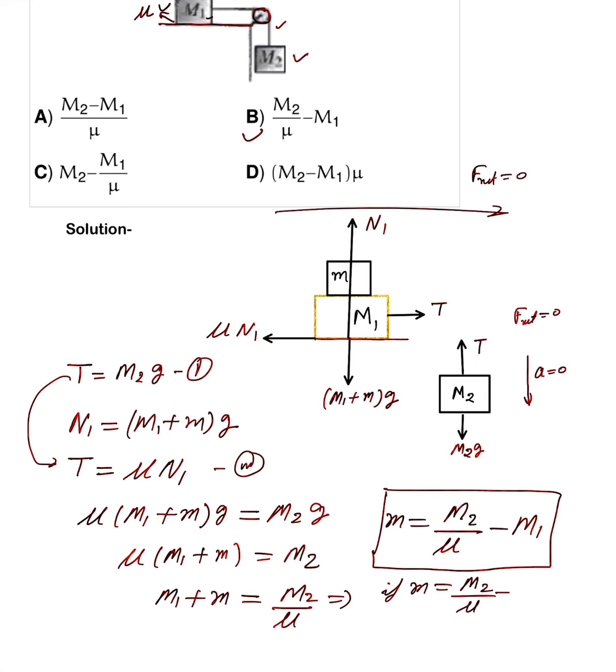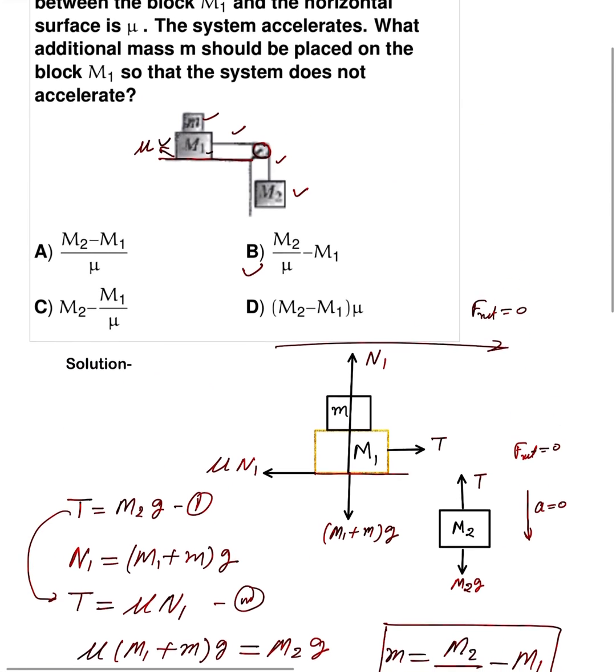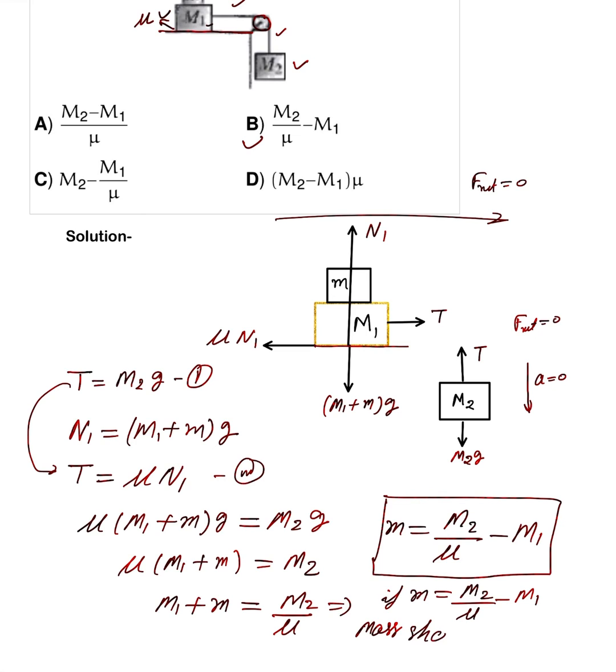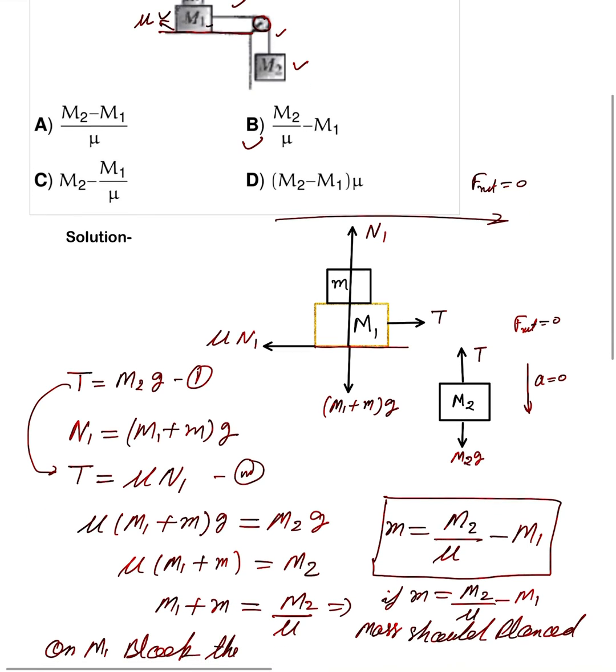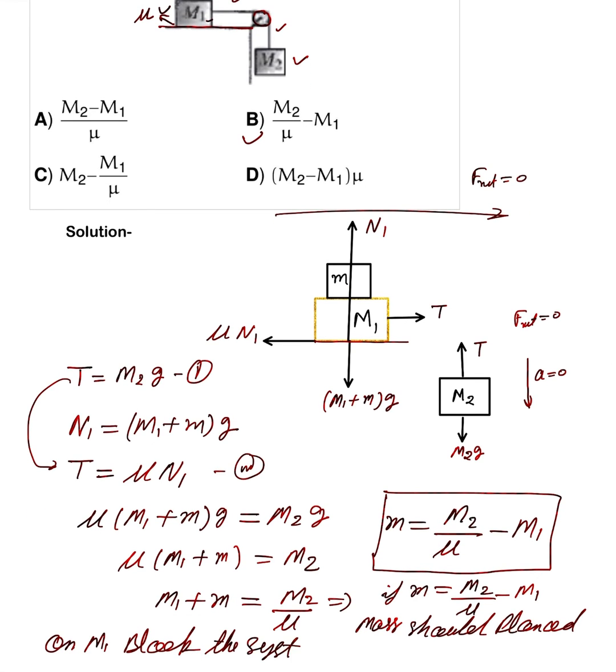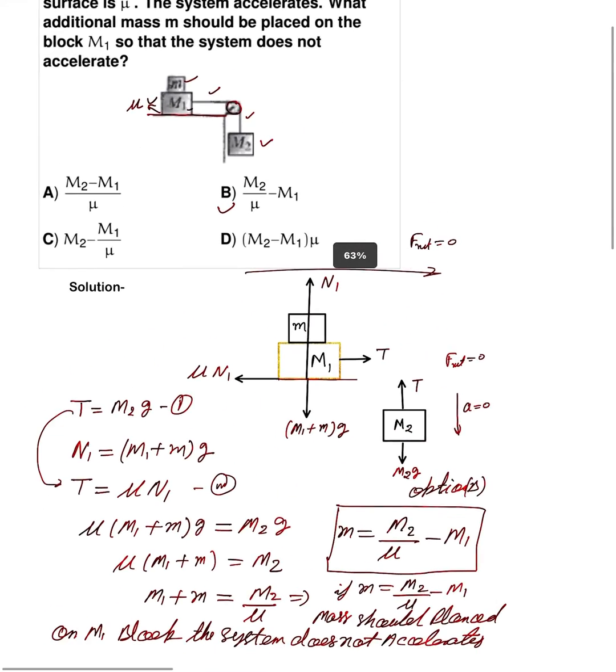If a mass m equals M2 by mu minus M1 is placed on the M1 block, the system does not accelerate. If you understand, then comment. Option B is the correct option. If you understand, comment and I will discuss again.